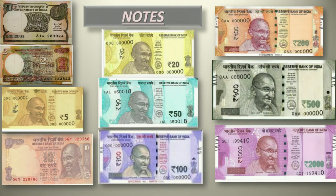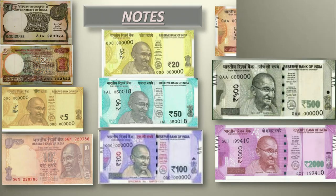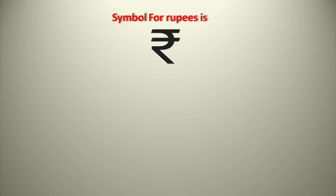Let us understand what is the important thing on a note. You must be seeing that on notes there is a symbol before the number — on the 200 rupee note, 500 rupee note, 20 rupee note, and 50 rupee note. This is the symbol for rupees. Whenever you want to write down an amount of money, you have to use this symbol in front of the number.